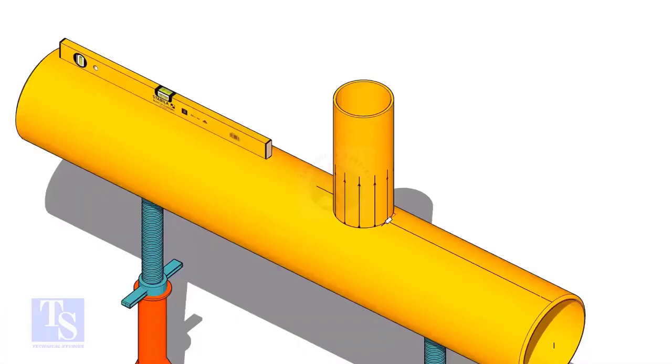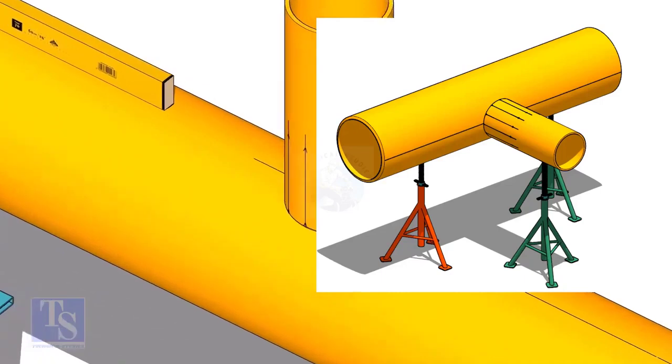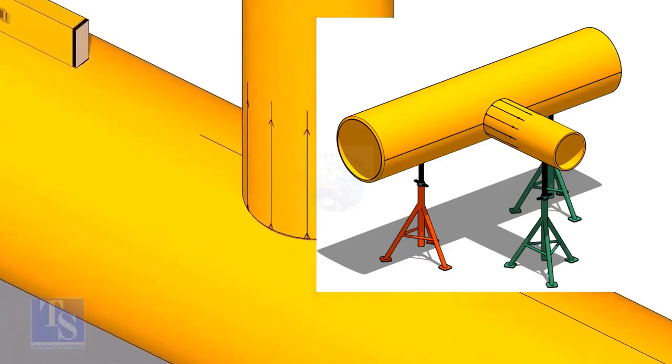Tack weld the branch on the header just to stand it vertically. If the pipes are large, you can do it in the horizontal position also.